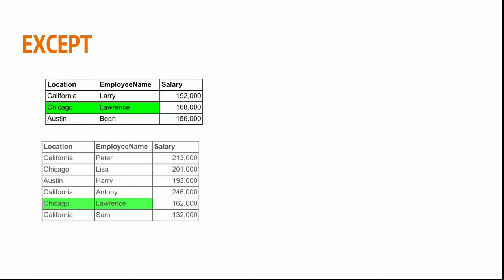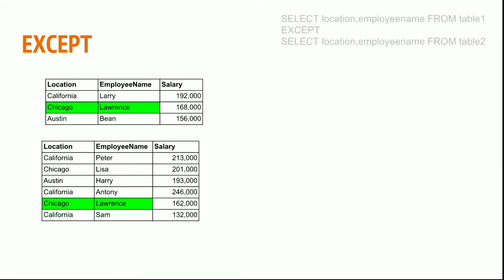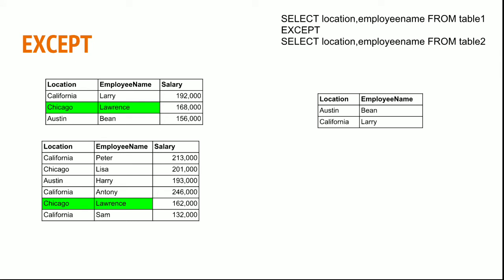Except. EXCEPT returns the records from the first table excluding all the records from the second table. When I write the EXCEPT keyword between two select statements, I get only Austin Bean, California, and Larry — ignoring Chicago Lawrence because Chicago Lawrence is present in table 2, and I want all records except the ones which are in table 2.